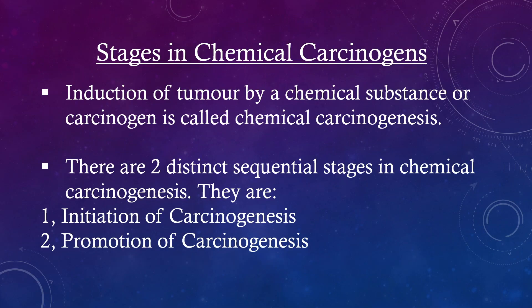Stages in chemical carcinogenesis. Induction of tumor by a chemical substance or carcinogen is called chemical carcinogenesis. There are two distinct sequential stages: initiation of carcinogenesis and promotion of carcinogenesis.